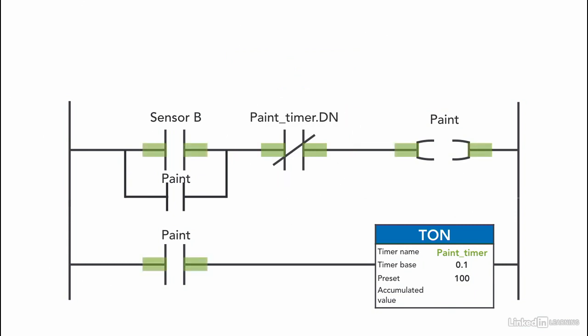The XIO instruction is highlighted when the bit is 0. As soon as the timer is done timing, the done bit is activated and XIO turns off—it's not highlighted anymore, and the paint is off.